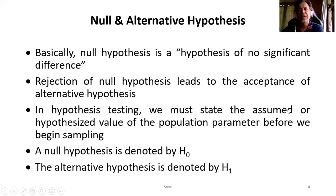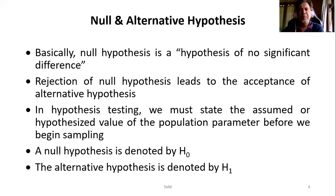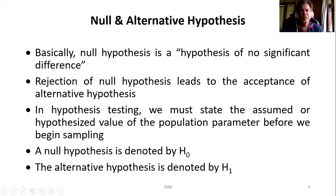In hypothesis testing, there are two different types. One is null hypothesis, another one is alternative hypothesis. Null hypothesis is a hypothesis of no significant difference — when I say no significant difference, I am assuming the population mean is equal to some assumed value; I neither say it is lesser than nor greater than. There is no difference between the assumed value of population mean and the actual value, so I assume it is equal. Such a hypothesis you call null hypothesis. When you accept it, you are accepting null hypothesis. But when you reject it, you need another one called alternative hypothesis. Rejection of a null hypothesis leads to the acceptance of alternative hypothesis.